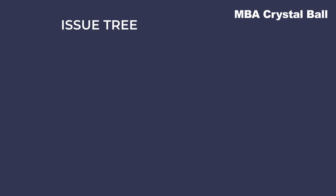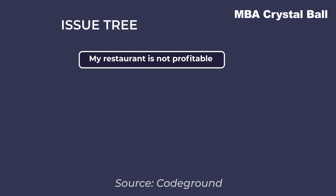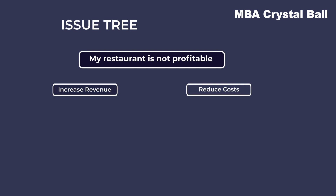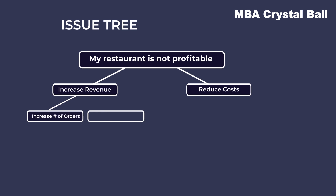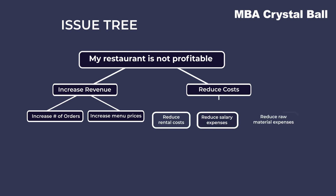Suppose the problem statement is: my restaurant is not profitable. An issue tree is created starting with the problem statement at the tree top. The top two responses would be: increase revenue and reduce costs. The second level with sub-issues would answer how to increase revenue and how to reduce costs. The answers under increase revenue would be: increase the number of orders and increase the prices of items. The answers under reduce costs would be: reduce salary expenditure, reduce rental, and reduce raw material expenses.